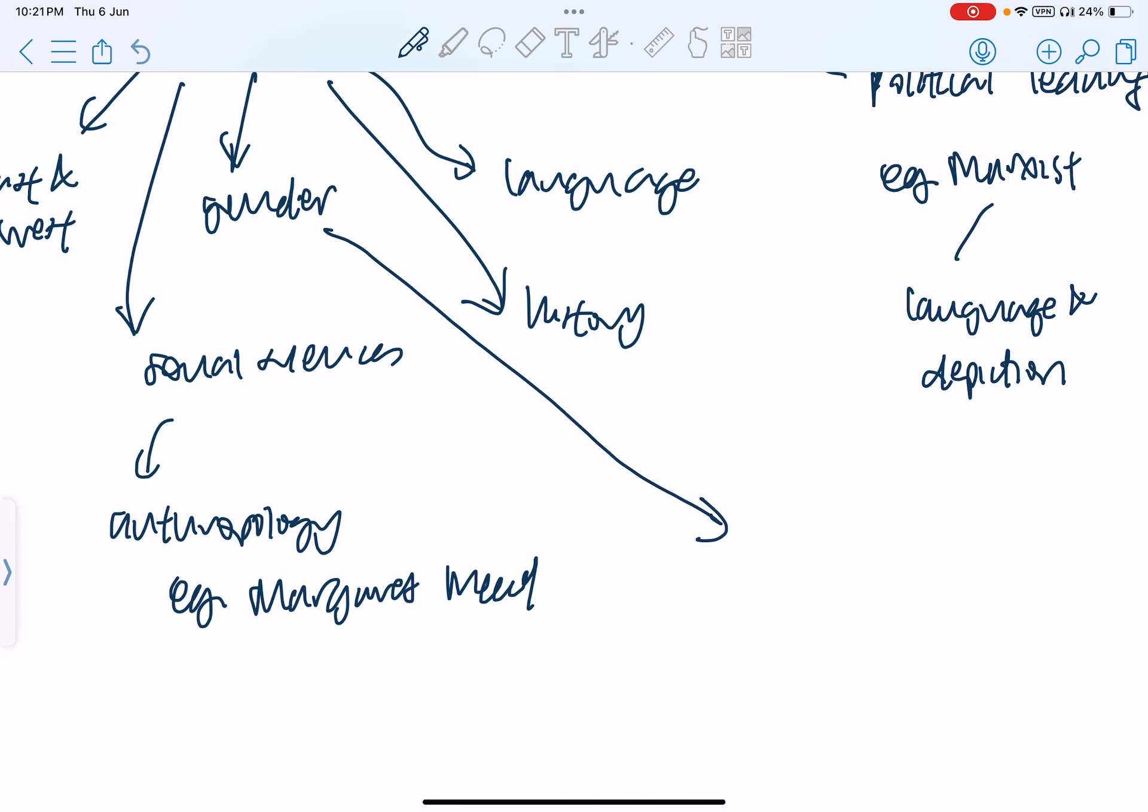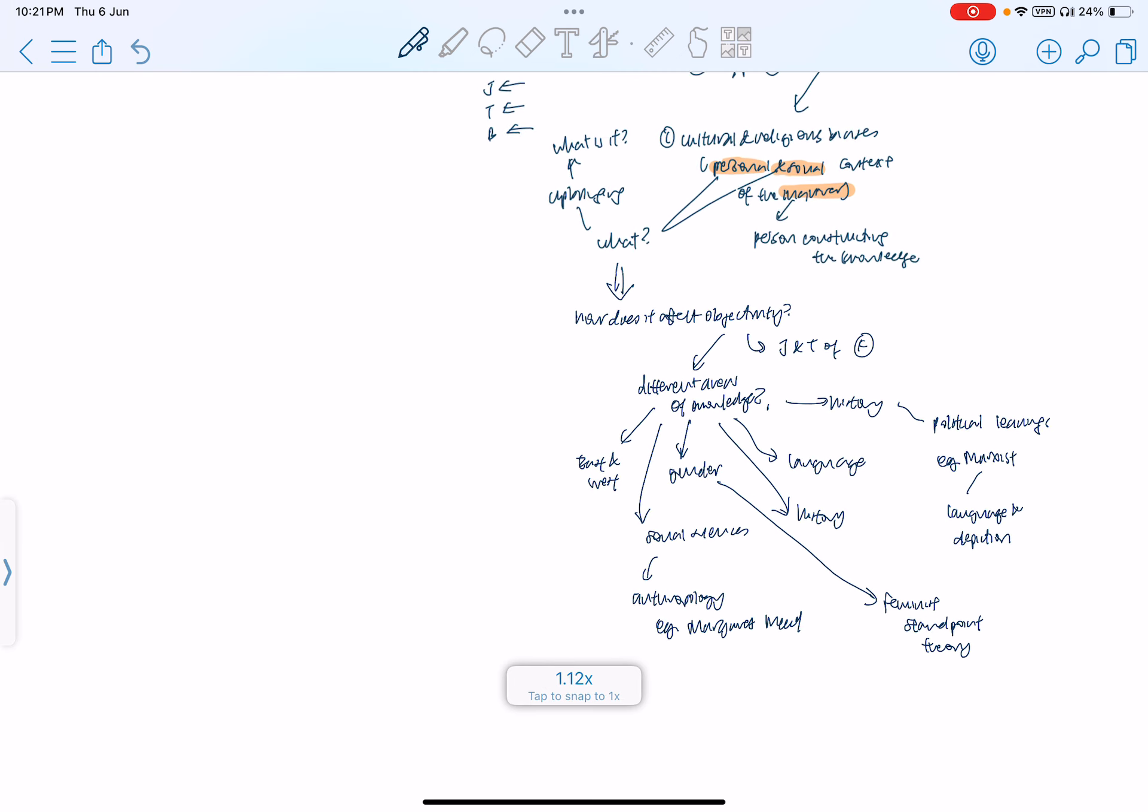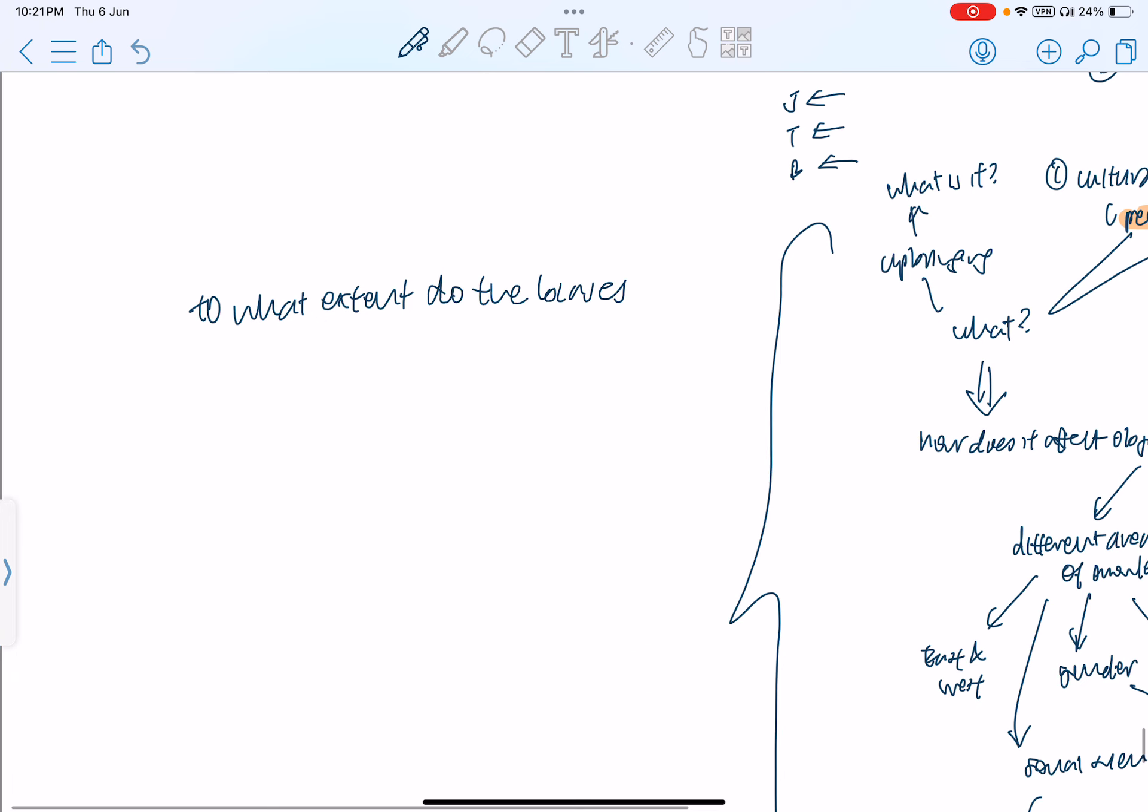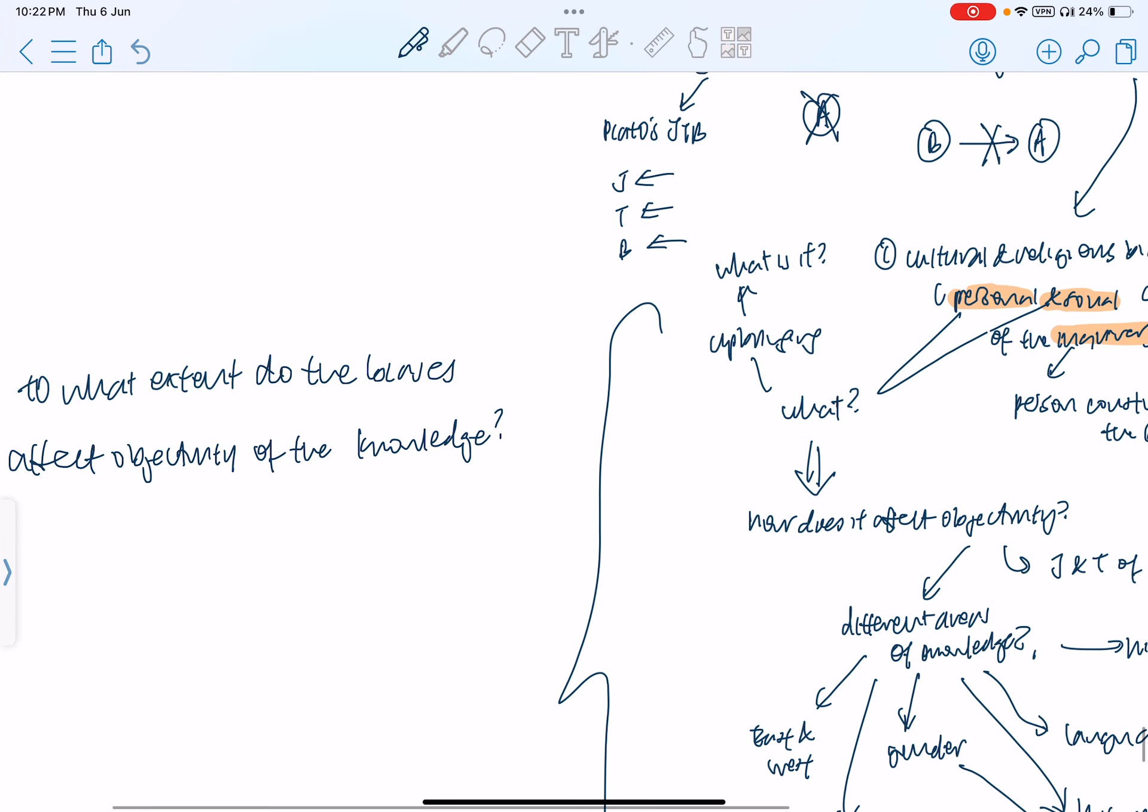In terms of gender, we forgot this feminist standpoint theory, which would also shape our way that we construct knowledge as well. So after listing out all of these big ideas, we can ask ourselves, to what extent do the biases affect objectivity of the knowledge? Some of the biases might affect objectivity of some areas of knowledge more so than others because of the nature of those areas of knowledge. Okay, let's move on to the next point.